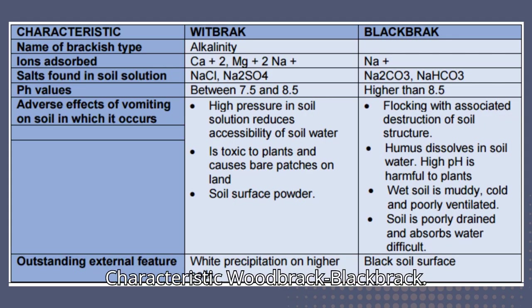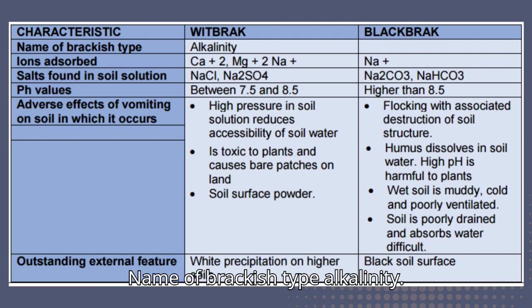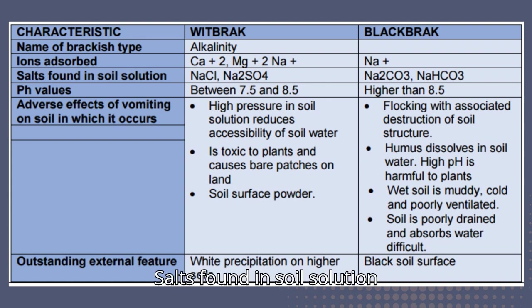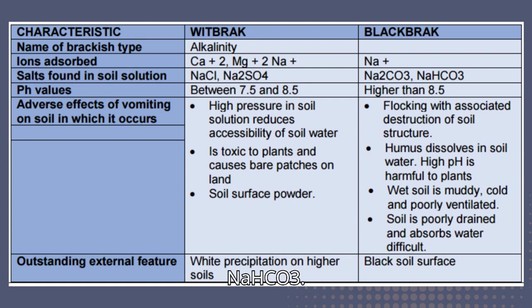Comparison between white brackish and black brackish soil. White brackish soil has ions adsorbed including Ca²⁺ and Mg²⁺, while black brackish soil has Na⁺ ions adsorbed. Salts found in the soil solution for white brackish include NaCl and Na₂SO₄, while black brackish contains Na₂CO₃ and NaHCO₃.